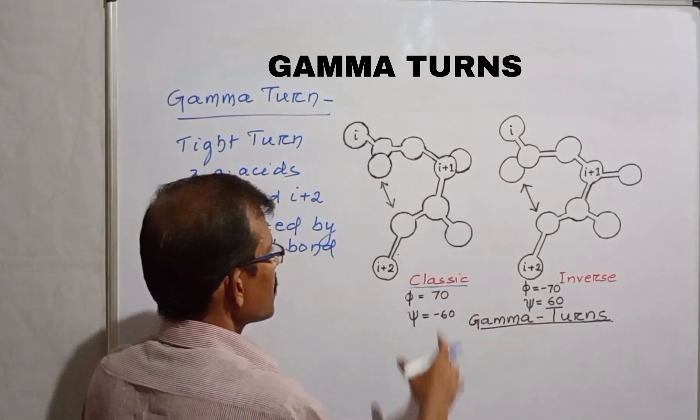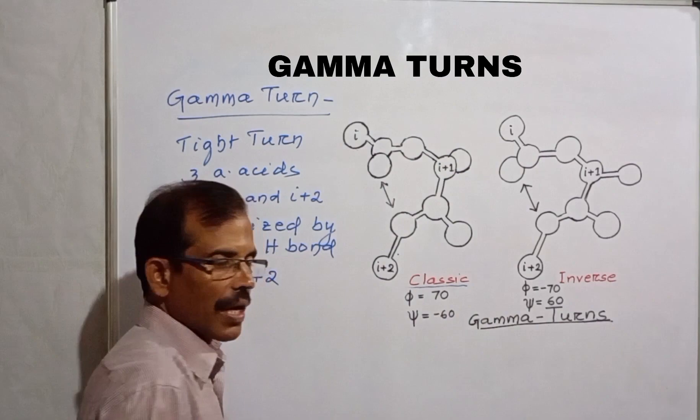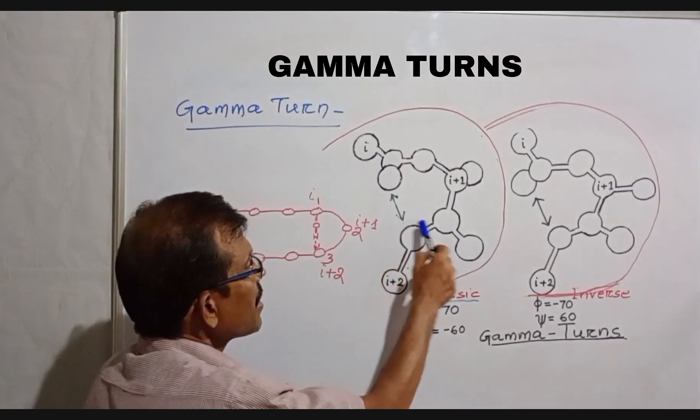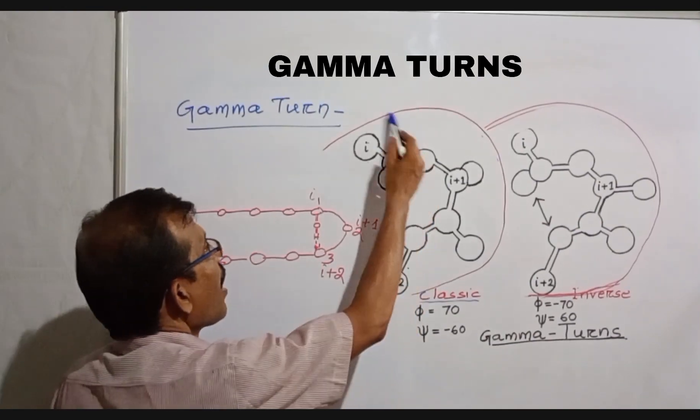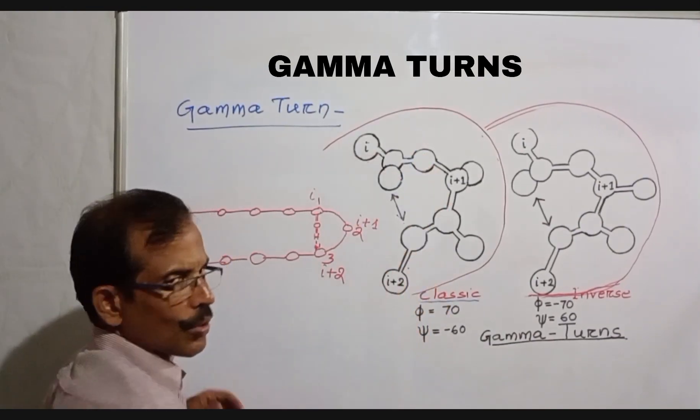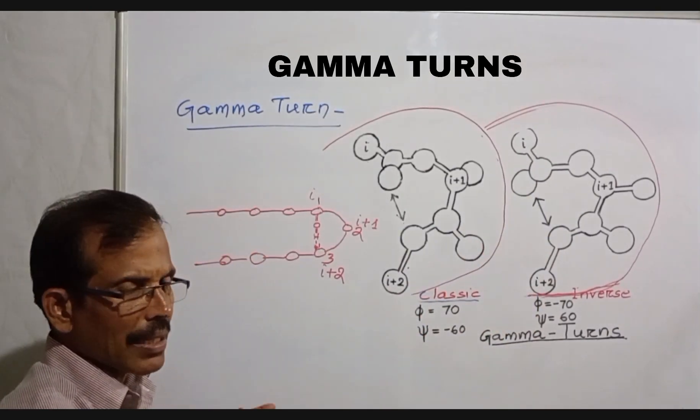In Gamma Turns, end residues are separated by two peptide bonds. This is the inter-residue hydrogen bond, which connects residues I and I plus 2. This bond provides stability to the Gamma Turns.